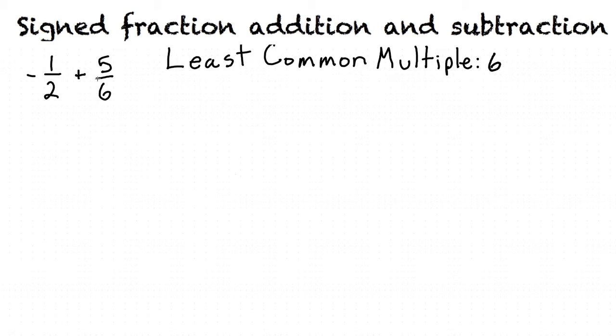Let's do an example. With our first fraction, negative 1 half, the denominator is 2. So to make it equal 6, we have to multiply it by 3. To keep the value of the fraction from changing, we must also multiply the numerator by 3, like this, and this gives us negative 3 over 6.